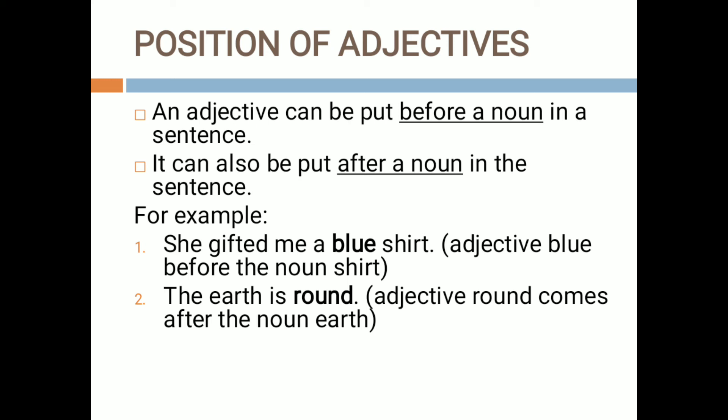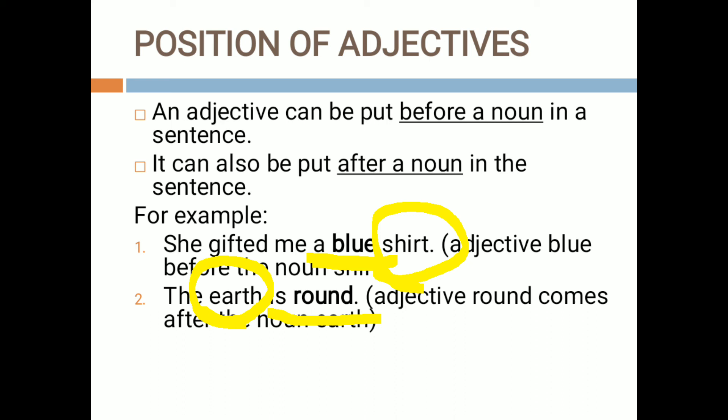For example, 'she gifted me a blue shirt.' The noun is shirt — a thing — and the color of the shirt is blue. Blue is the adjective, and it is written before the noun 'shirt,' so the position of the adjective is before the noun. In the second example, 'the earth is round.' Earth is the noun, and round is the shape of the earth. Here the noun is written first and then the adjective — both positions are correct.